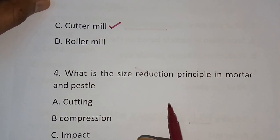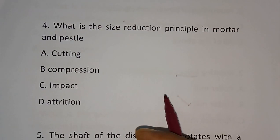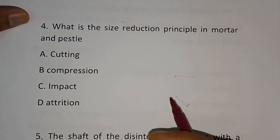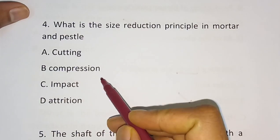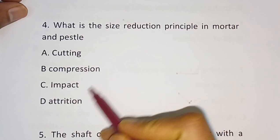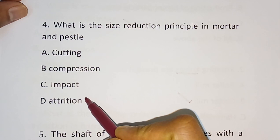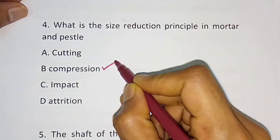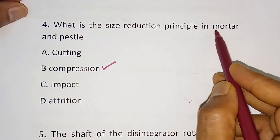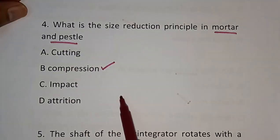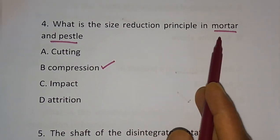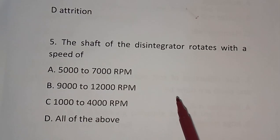Question number 4: What is the size reduction principle in mortar and pestle? Options are: cutting, compression, impact, attrition. The correct answer is compression. Compression is the working principle behind the size reduction in mortar and pestle.